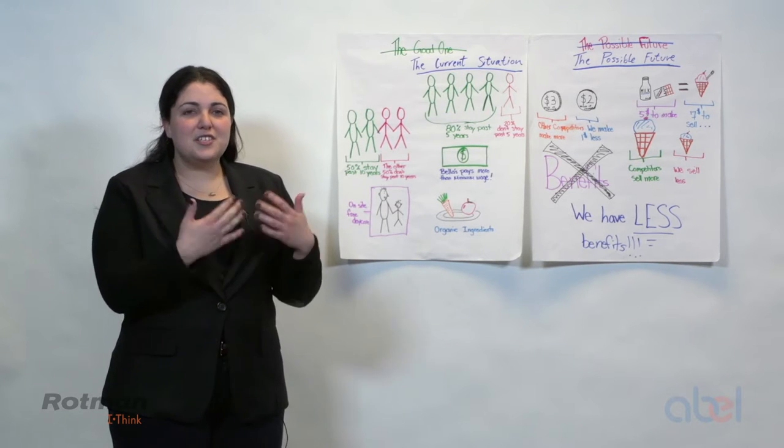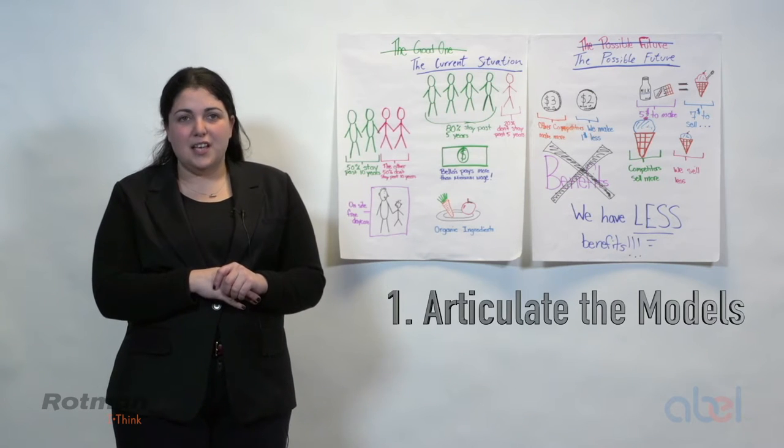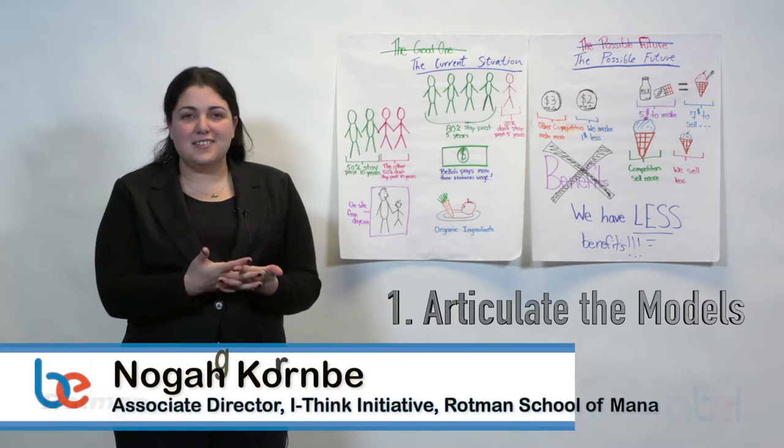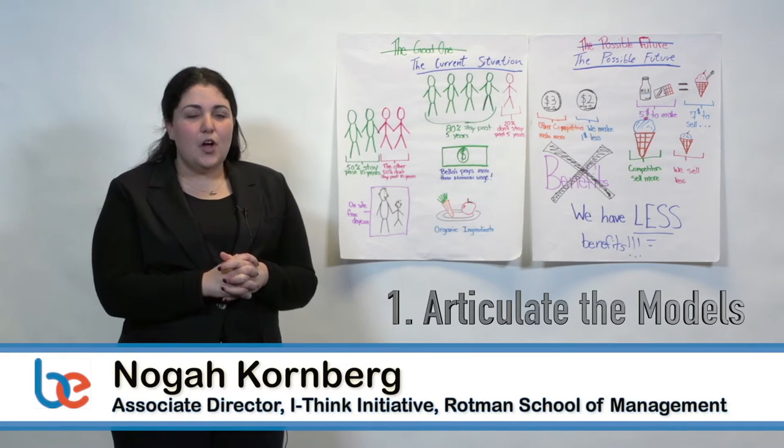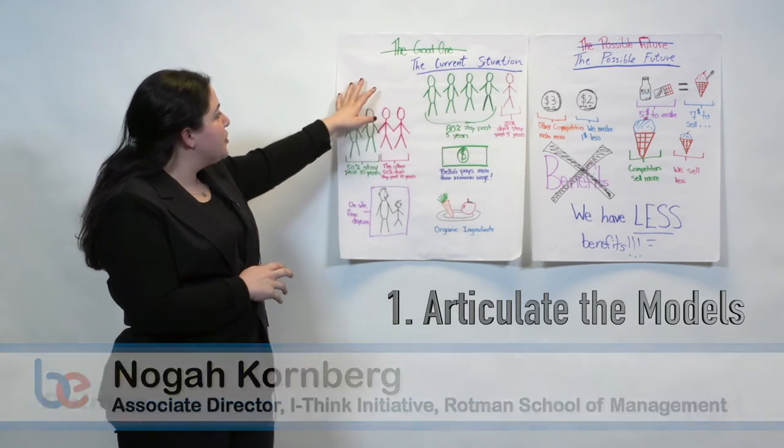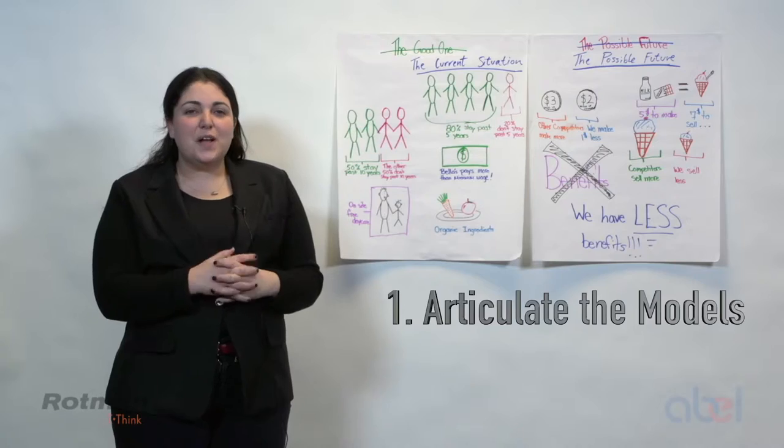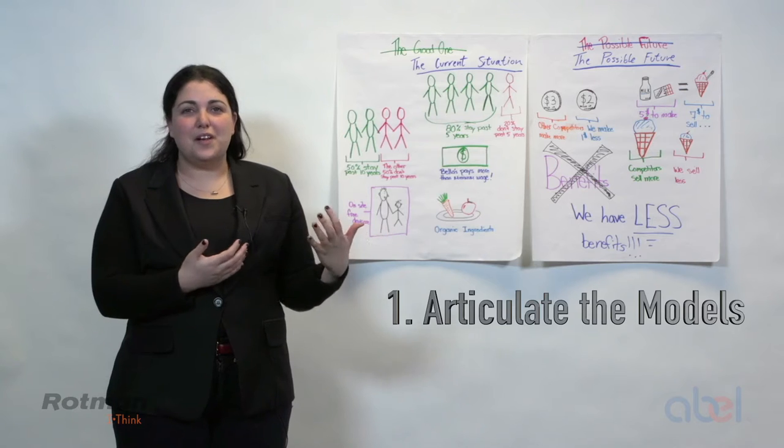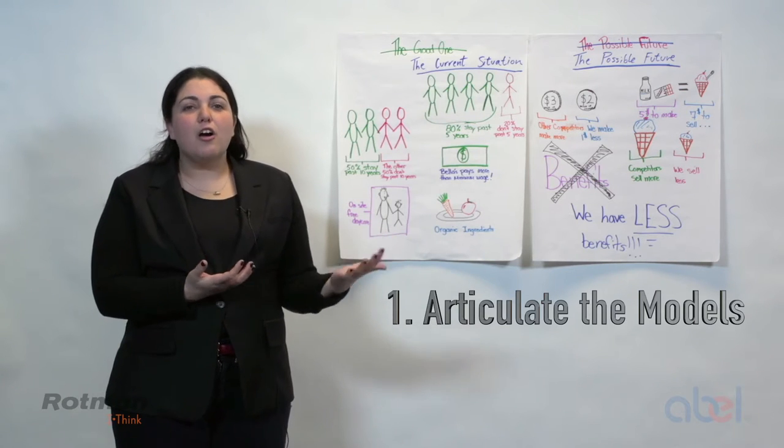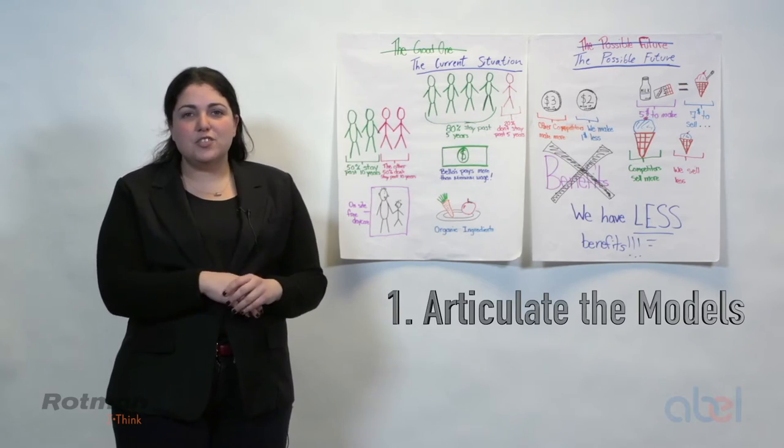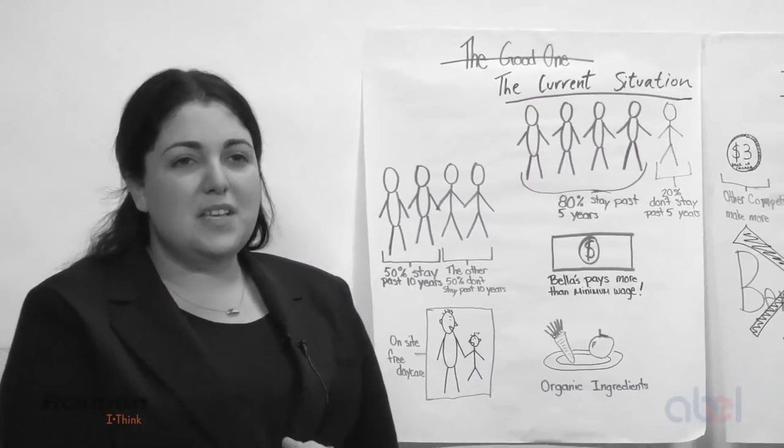So in this first step, they're articulating the opposing models. What we're really trying to highlight through these visuals is the tension that this ice cream company is facing. What you'll notice is that in this first one, they had to cross off the title. They initially named it the good one, which by default would have had the second model being the bad one. It is hard to believe that there's value in a bad model. And so we asked the students to rename the good model so that they could give themselves a chance to see the value in both.